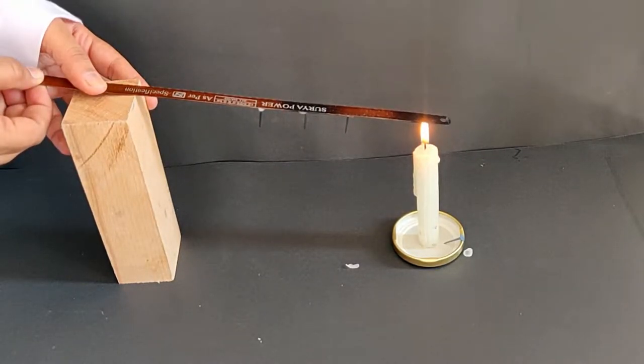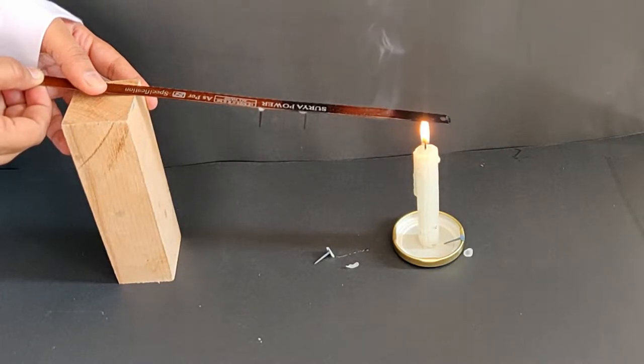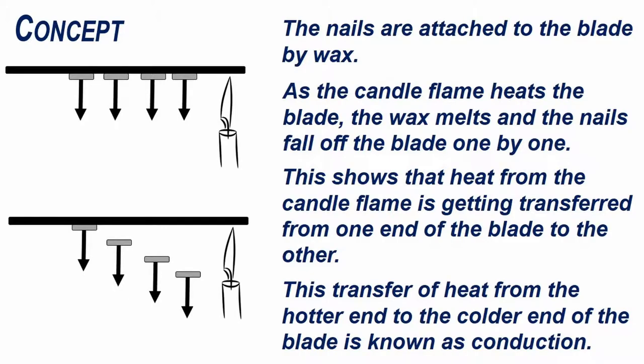Notice the direction in which the nails fall. The nails are attached to the blade by wax. As the candle flame heats the blade, the wax melts and the nails fall off the blade one by one.